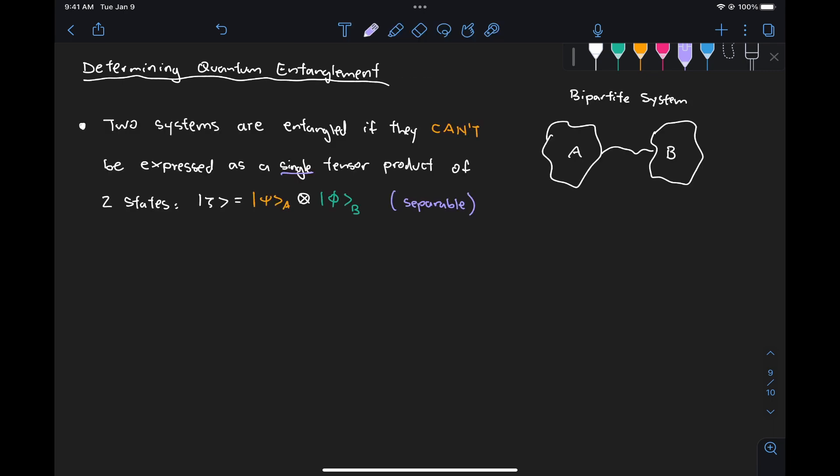Well, if we take for example the case of a bipartite system, so a system composed of subsystems A and B, we say that the overall state of this system is entangled if it cannot be expressed as a single tensor product of two states, so in this case psi A and phi B, that each represents the individual states of subsystem A and subsystem B respectively.